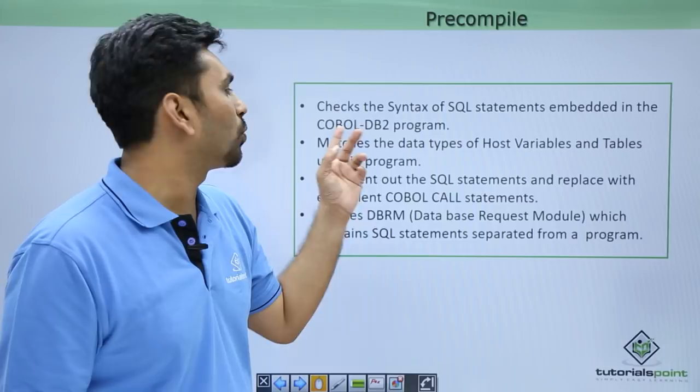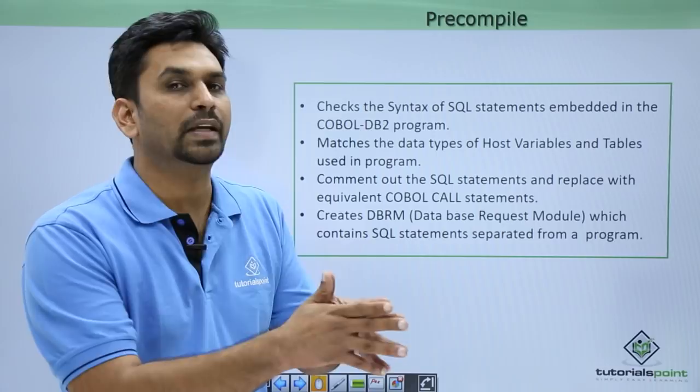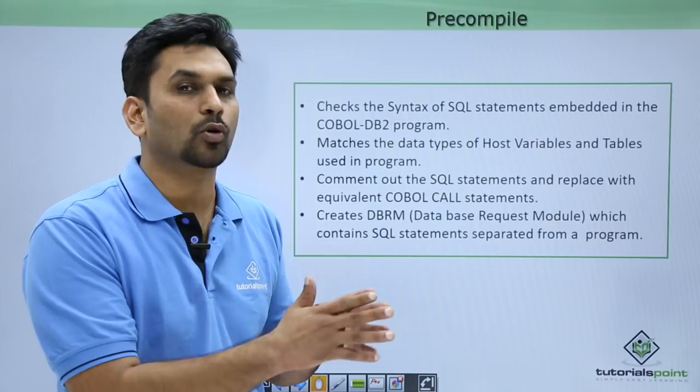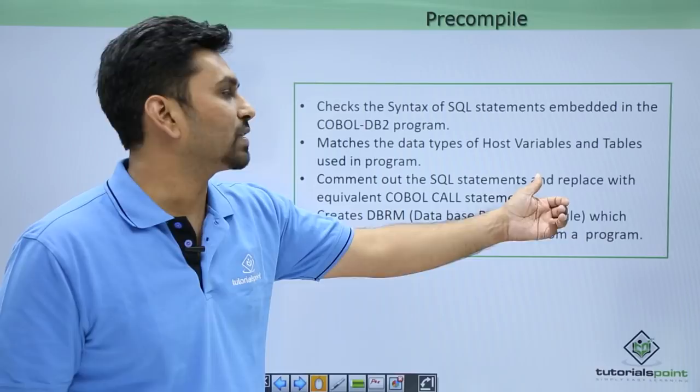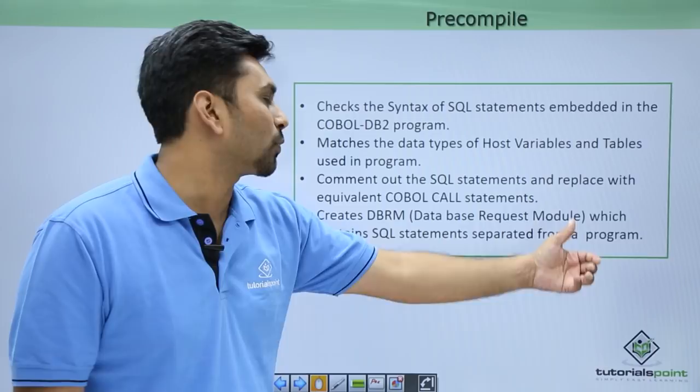It matches the data types of host variables and the tables used in the program. For example, if you are inserting some data, in the pre-compilation step itself it will check whether the COBOL data type and the DB2 data type are compatible. Then it comments out the SQL statements and replaces them with equivalent COBOL call statements. Finally, it creates a DBRM — a database request module — which contains SQL statements separated from the program.